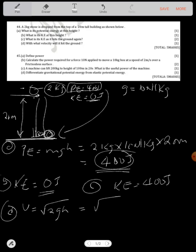So we have square root of 2 times g is 10, height is 20. So you have 2 times 10 times 20, you are having the square root of 400. What's the square root of 400? It's 20, so your velocity is 20 meters per second.